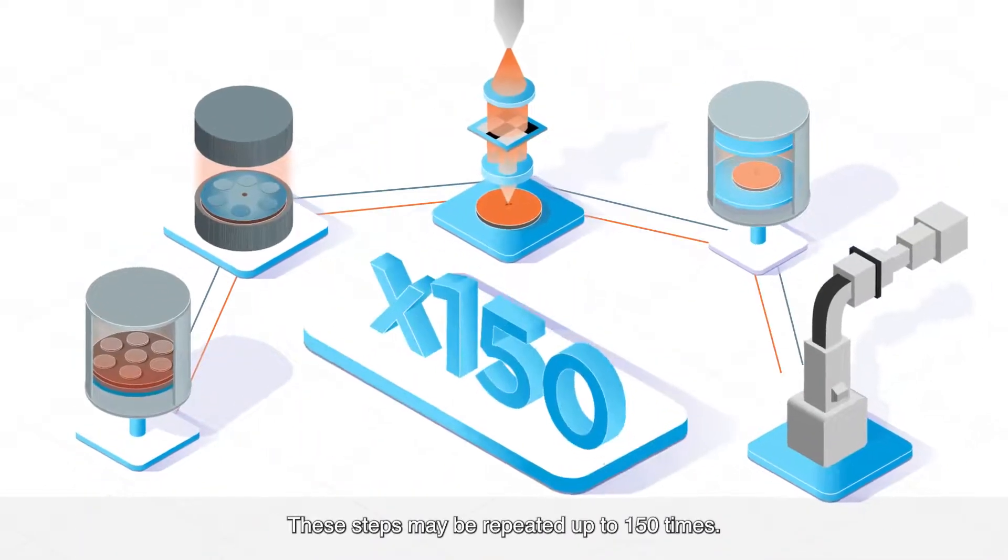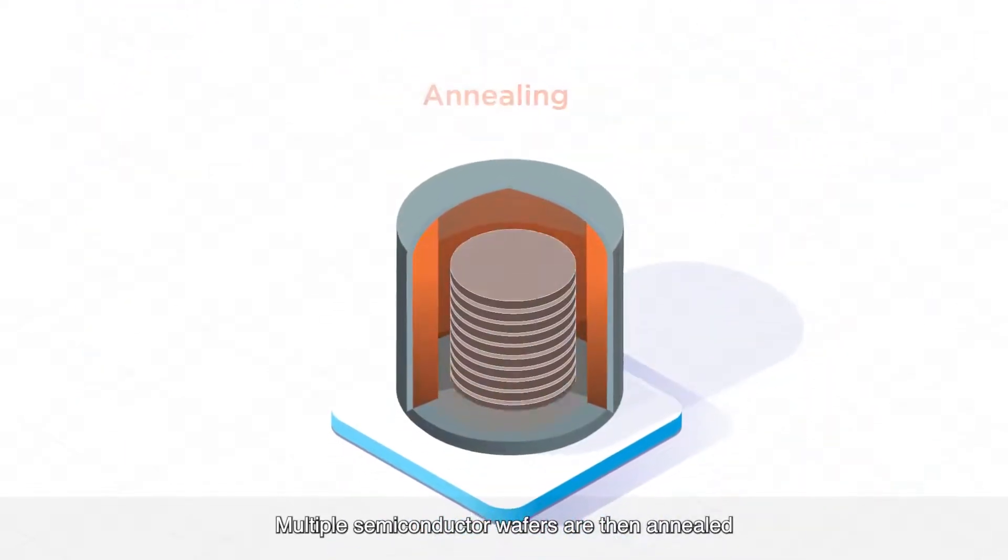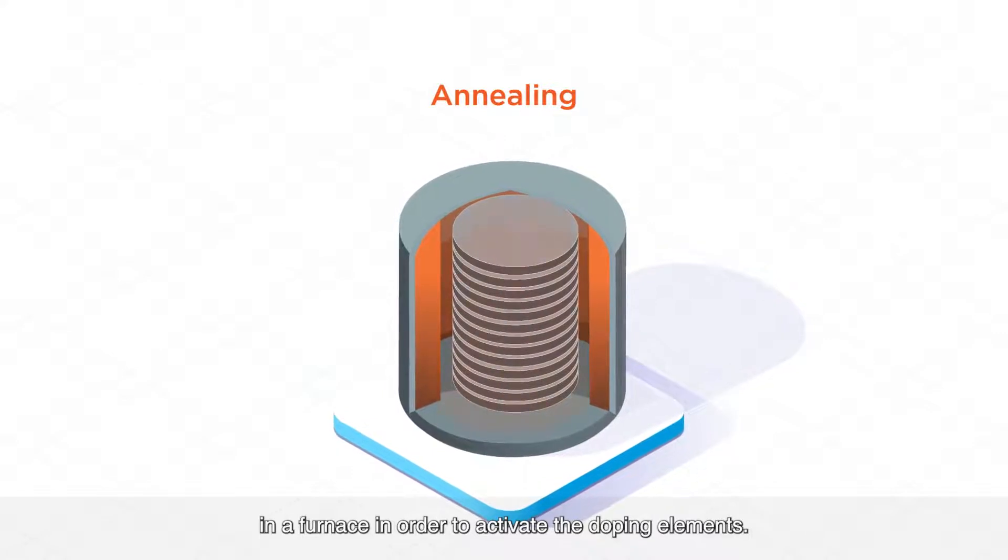These steps may be repeated up to 150 times. Multiple semiconductor wafers are then annealed in a furnace in order to activate the doping element.